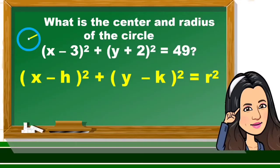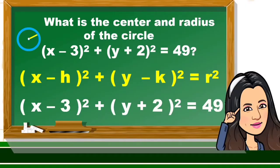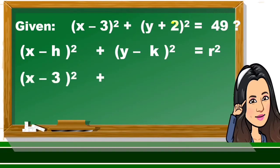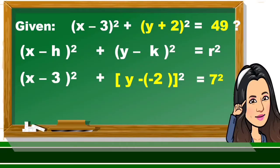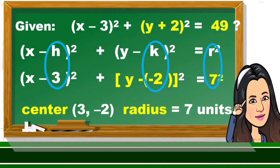First, use the standard form of the circle. Comparing it to our given equation, we can see the value of h is 3, but we need to rewrite the second term. Instead of y plus 2, we write y minus negative 2, and rewrite 49 as 7 squared. The center is at point (3, −2) and the radius is 7 units.